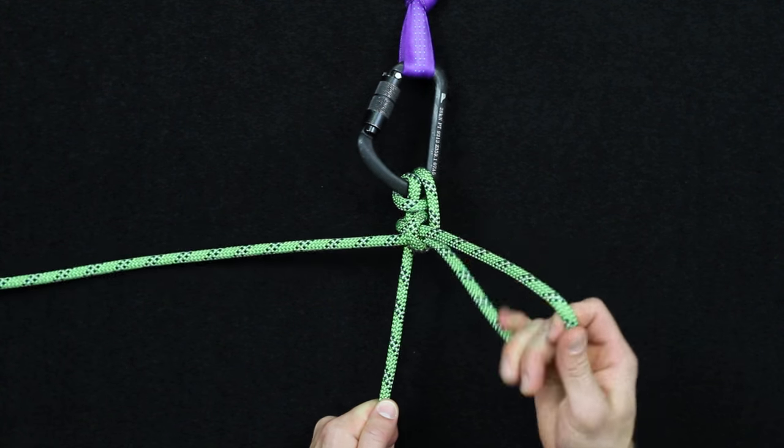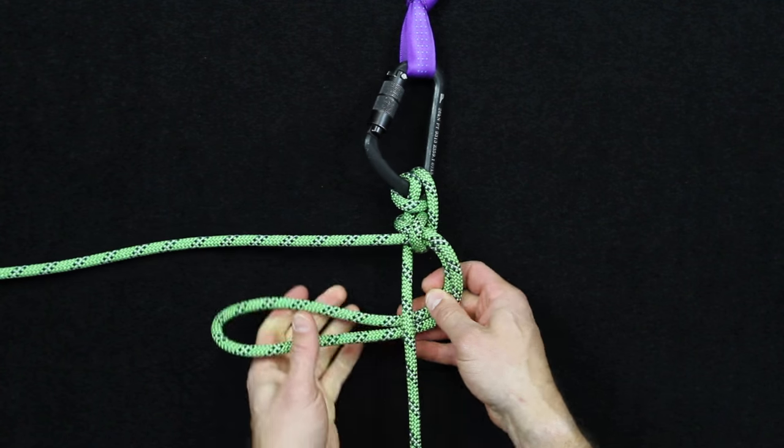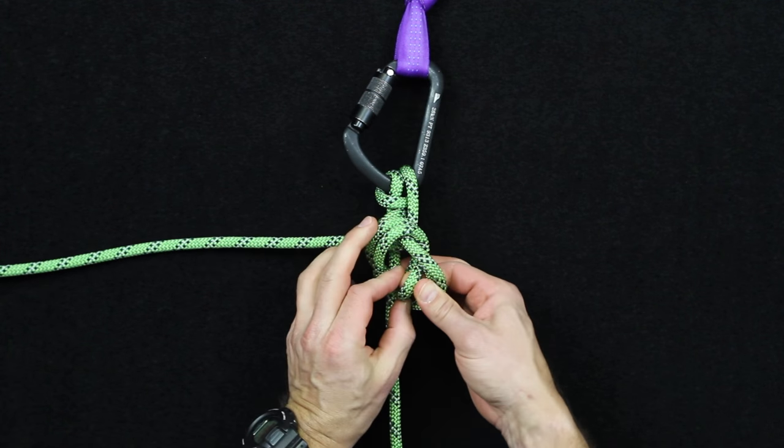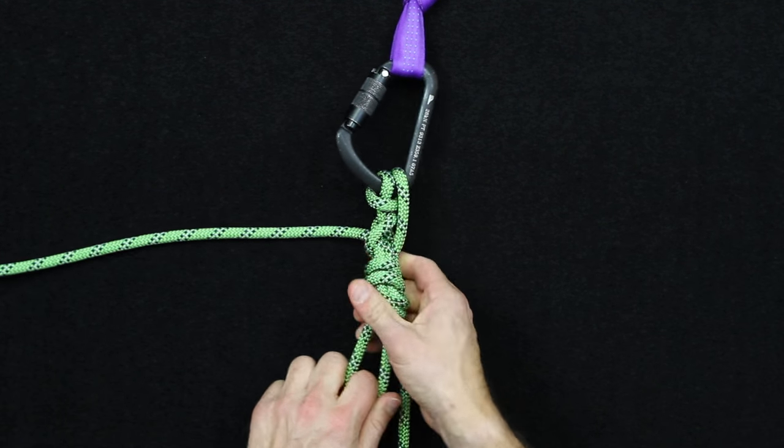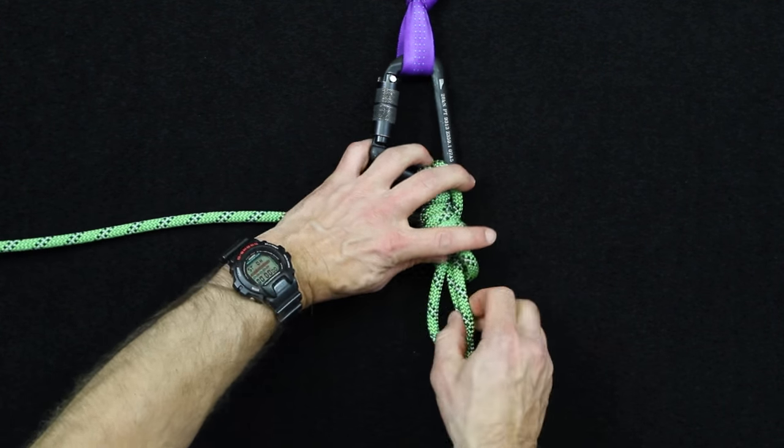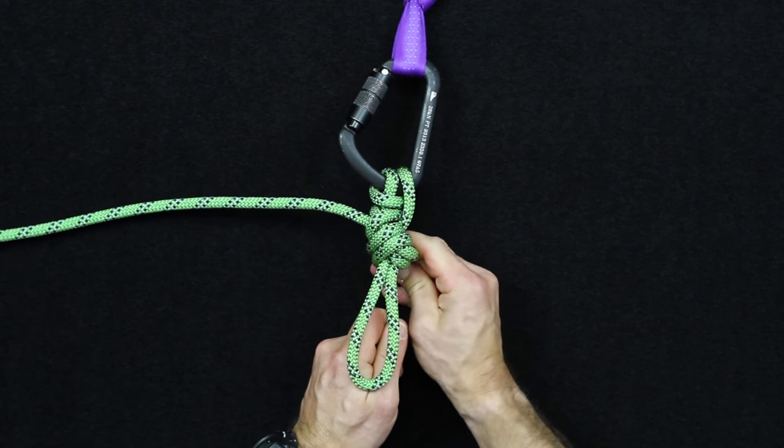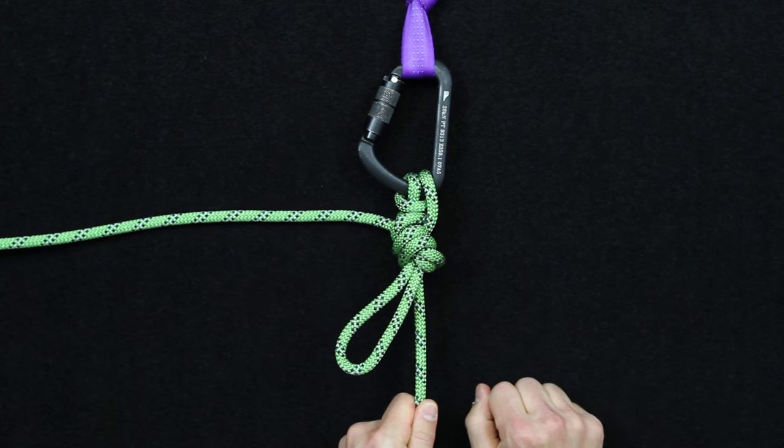What you can do now is you can pull this loop a little bit, just like so, and come around and back this up with just an overhand knot like so. And you can take that overhand and make sure that it's as close as possible to the knot. So that's a properly backed up Munter Mule.